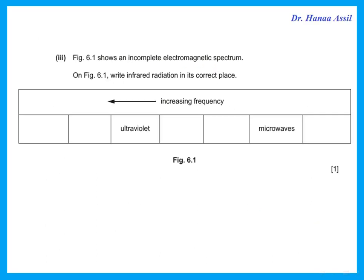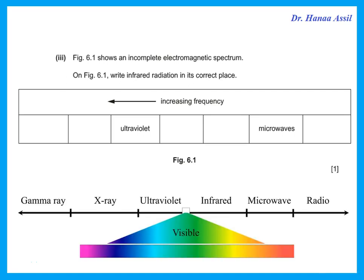Figure 6-1 shows an incomplete electromagnetic spectrum — write infrared radiation in its correct place. You have to know the order of the spectrum: gamma rays, X-rays, ultraviolet, visible, infrared, microwave, radio. So infrared is placed before the microwaves.